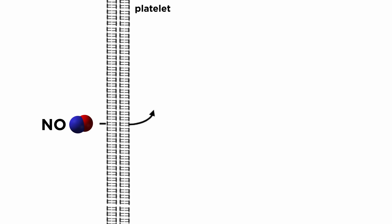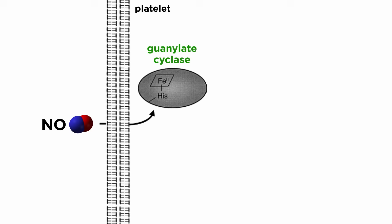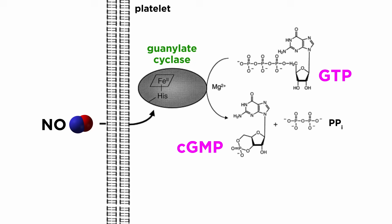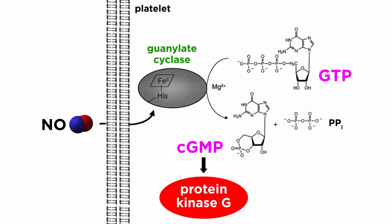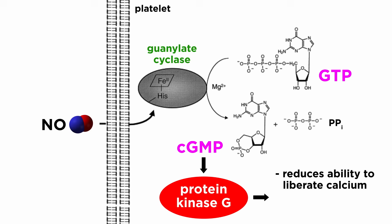NO is a lipophilic gas that easily moves into the platelet across its plasma membrane and activates guanylate cyclase, which increases the conversion of GTP, or guanosine triphosphate, to cGMP, or cyclic guanosine monophosphate, the latter of which activates protein kinase G. Protein kinase G has many targets that it phosphorylates, but a few important ones involve reducing the platelet's ability to liberate calcium from intracellular stores and influencing cytoskeleton dynamics, which we will cover in more detail when we discuss the dynamics of platelet activation.